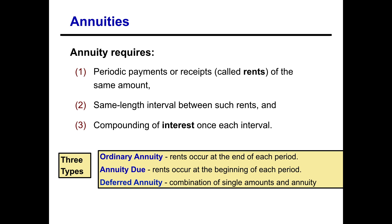There are three types of annuities we're going to talk about. The first one, covered in this video, is ordinary annuities, where the rents occur at the end of each period. In the next video we'll talk about annuity due, where the rents occur at the beginning of each period, as they are treated differently. The last one is the deferred annuity, which is a combination of both lump sum amounts and annuities.